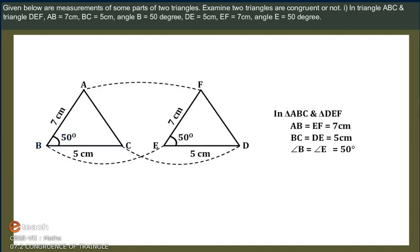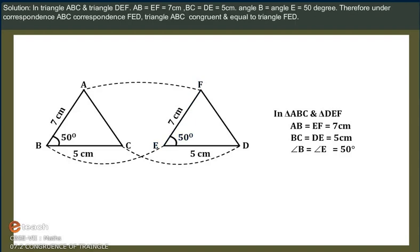Side DE is equal to 5 cm, side EF is equal to 7 cm, and Angle E is equal to 50 degrees. Therefore, BC is equal to DE is equal to 5 cm, and Angle B is equal to Angle E is equal to 50 degrees.